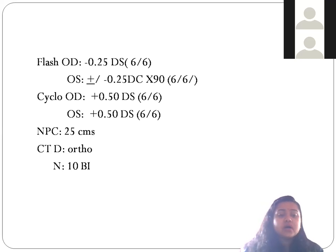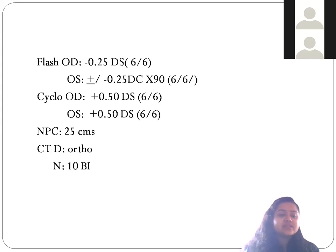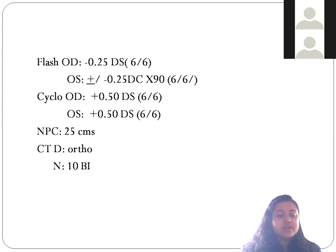Now we are doing the cover test. For distance, we found orthophoria — completely orthophoria for distance. For near, it is 10 prism base in, meaning 10 prism exophoria at near. We can measure this with the prism bar cover test — so for near, we have 10 prism exophoria, and for distance it is ortho.